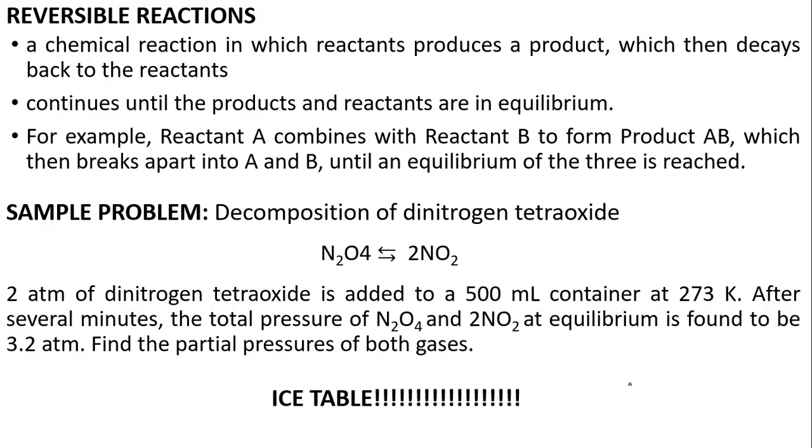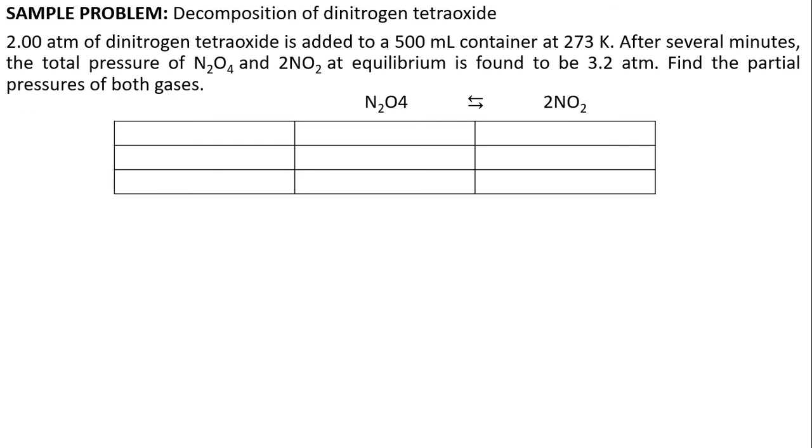Let me introduce you to the ICE table. What you want to do is to make a table under the product and the reactant. You have here the initial, change, and equilibrium. That's why it's ICE: I, C, E. Let's define them first. I stands for initial concentration. This row contains the initial concentration of products and reactants. C stands for the change in concentration. This is the concentration change required for the reaction to reach equilibrium. It's either positive or negative. This row represents an increase or decrease or no change in concentration. Last, we have the equilibrium. This is the summation of the initial and change rows.